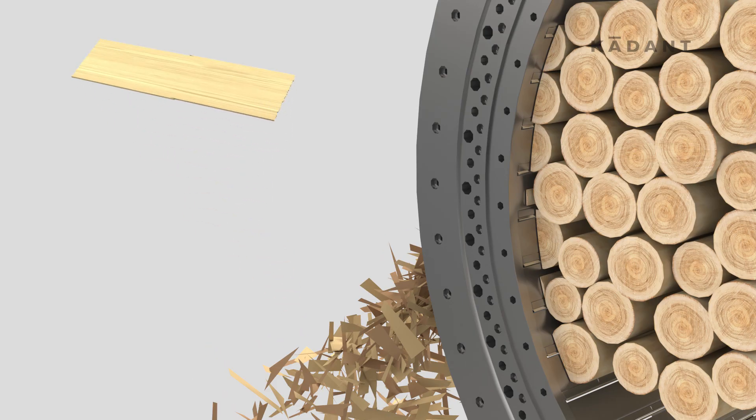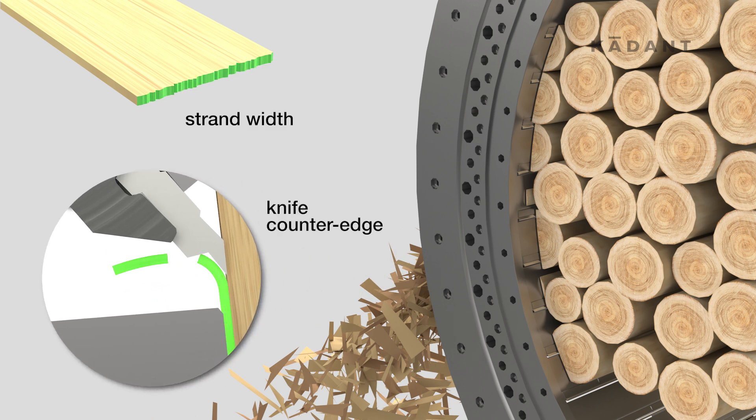The strand width is controlled by the counter knife angle. Lower angles are used to increase strand width, and conversely, higher angles produce narrower strands.